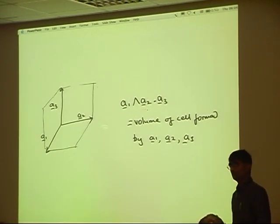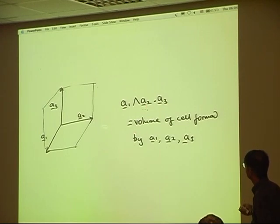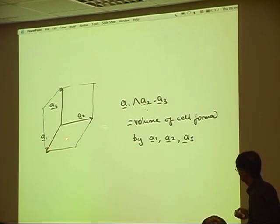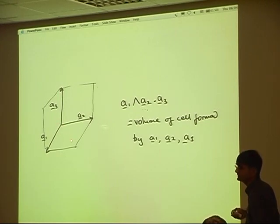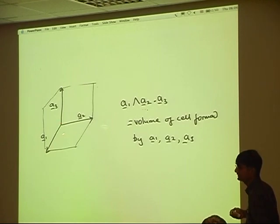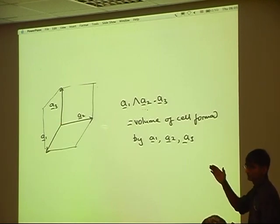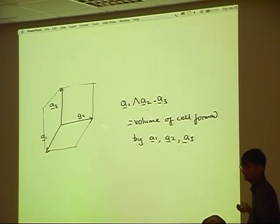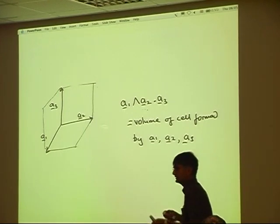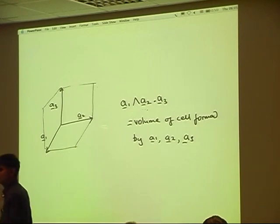If I take a combination of the cross product and the dot product, then A1 cross A2 dotted with A3 gives me the volume of the unit cell. A1 cross A2 is the area of the base, and gives a vector at 90 degrees to that plane. Taking the dot product of A3 with that vector tells me the height of the unit cell, so area times height gives the volume — whether it's a cubic or triclinic cell.